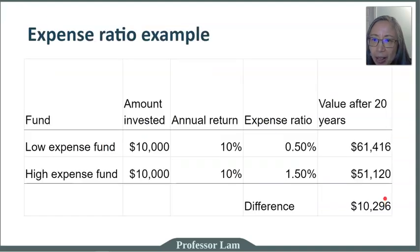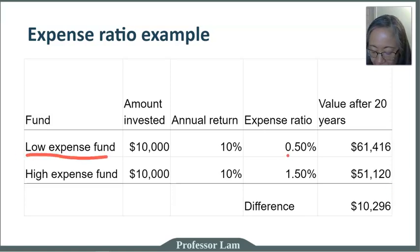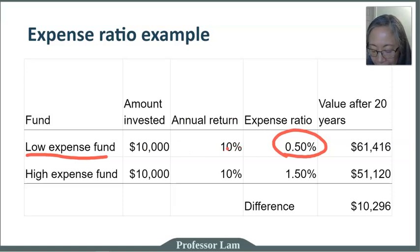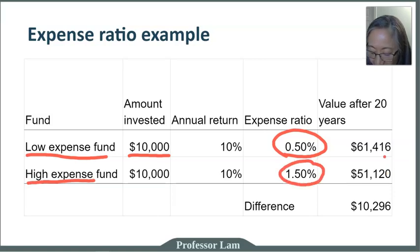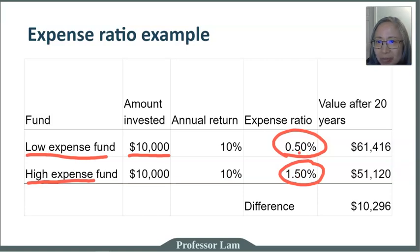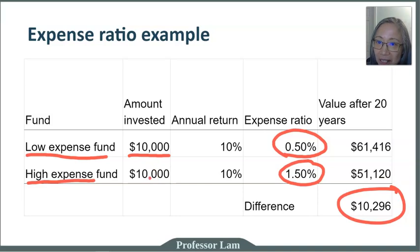Let's look at an example of how expense ratio affects your bottom line. In a low expense fund with an expense ratio of only 0.5%, if you invest $10,000 and the fund generates 10% return per year, after 20 years the money will have grown to $61,000. In a high expense fund with an expense ratio of 1.5%, earning the same 10% return, you will only increase to $51,000. The difference between 0.5% and 1.5% may not sound like a lot, but with only a $10,000 investment the difference is $10,000 — that is actually quite significant.